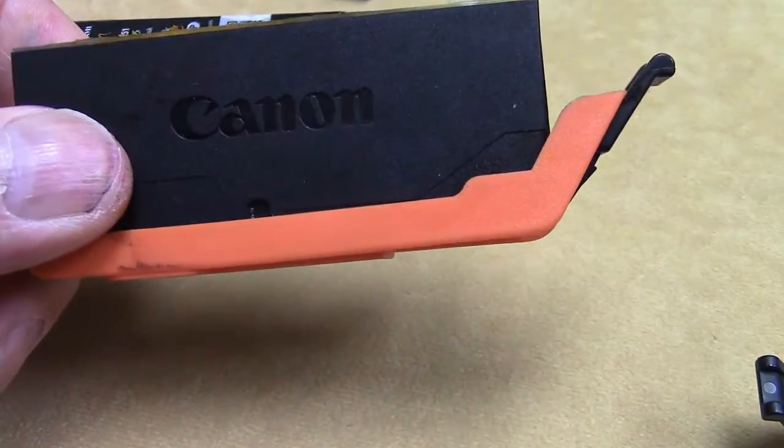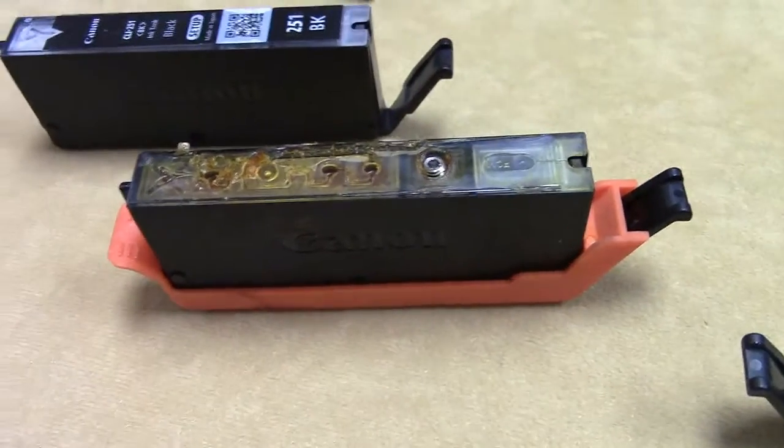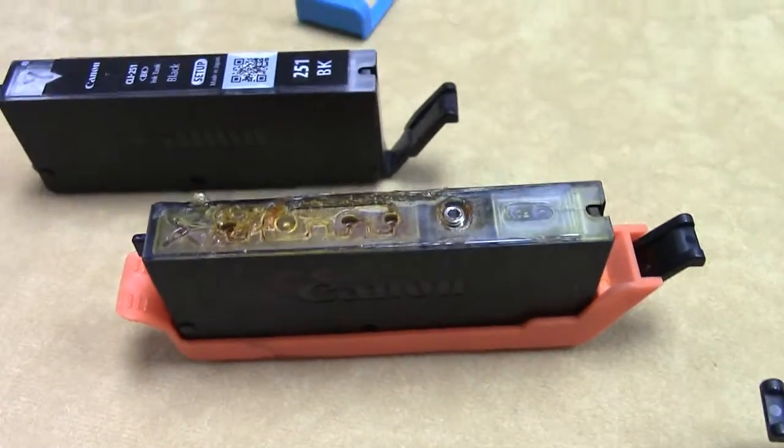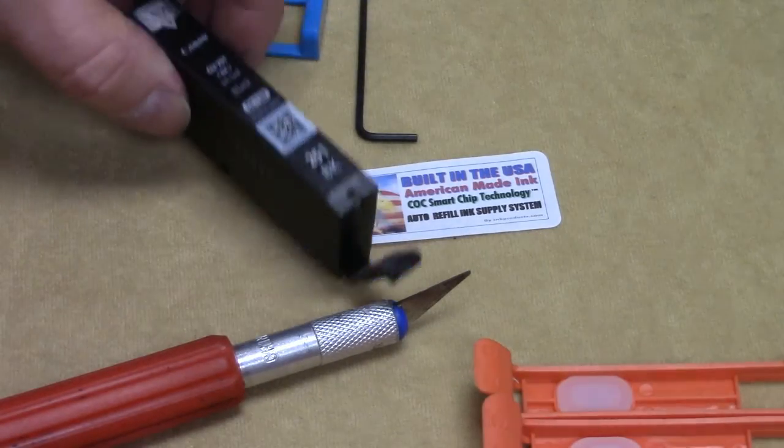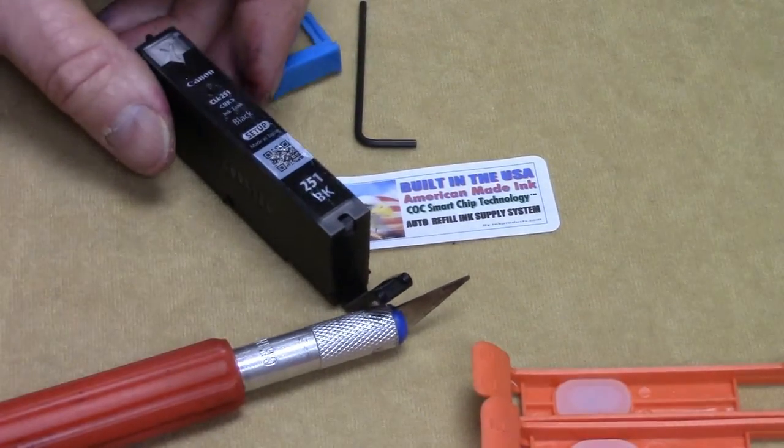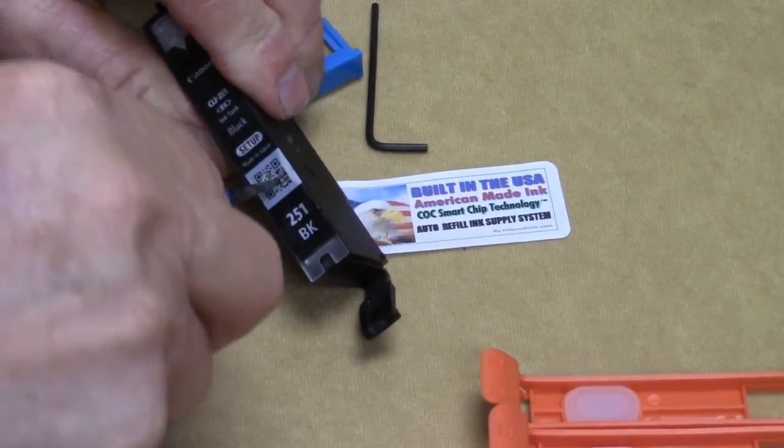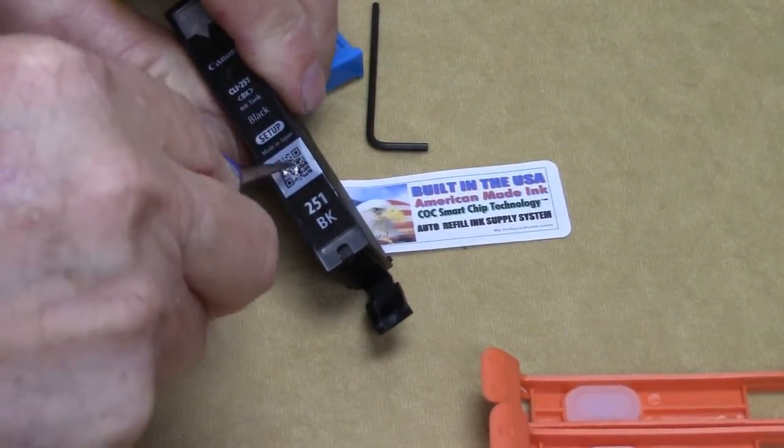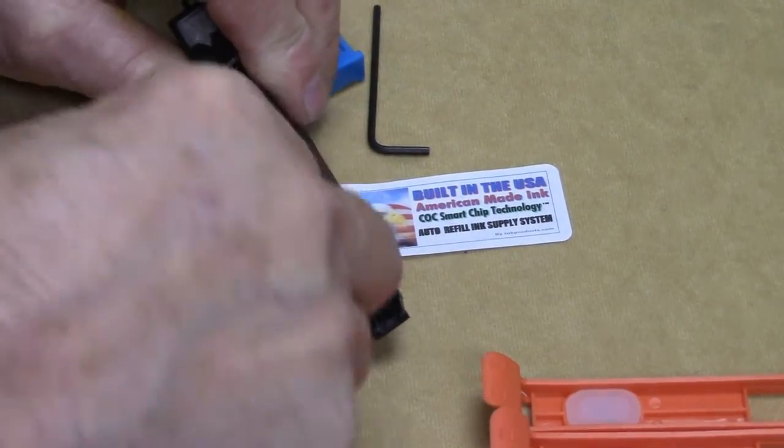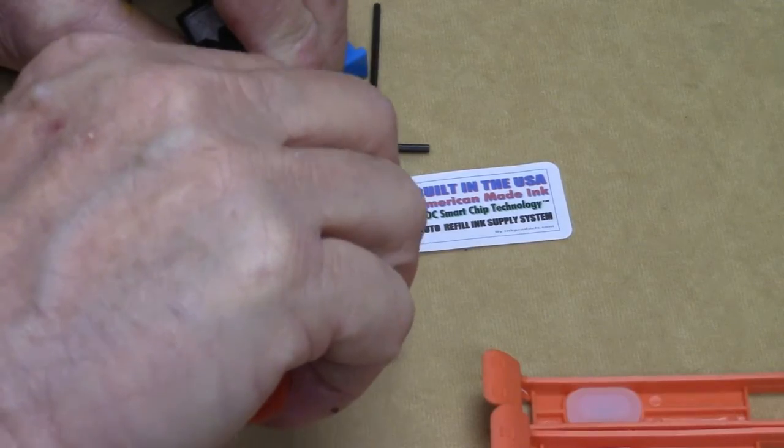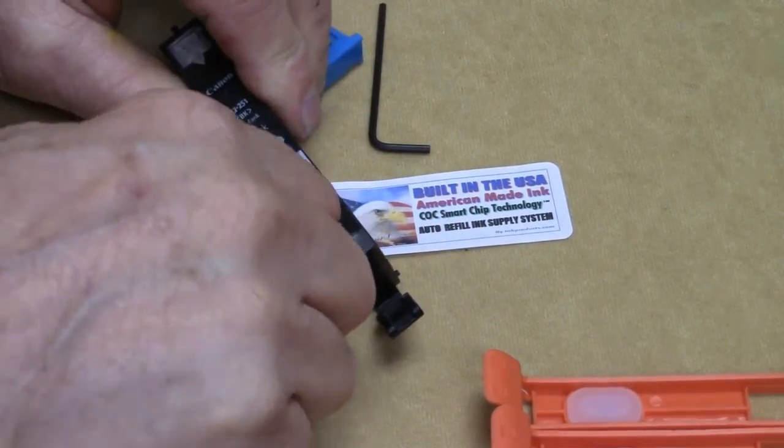Now you can leave it in the orange clip and you can use it as a storage clip also, so if you're not ready to use the cartridge right away. First thing I'm going to do is take the label off around the sealing ball. So I used a little X-Acto and I have to cut away at it so you can see it. See it's right underneath there.